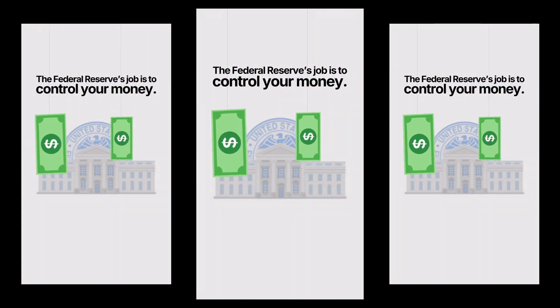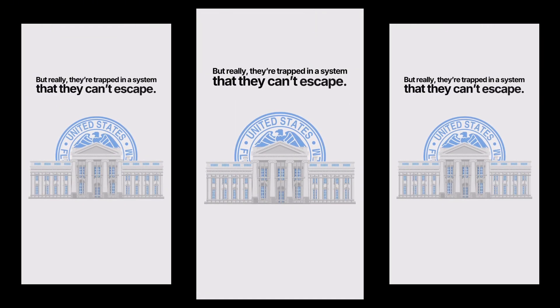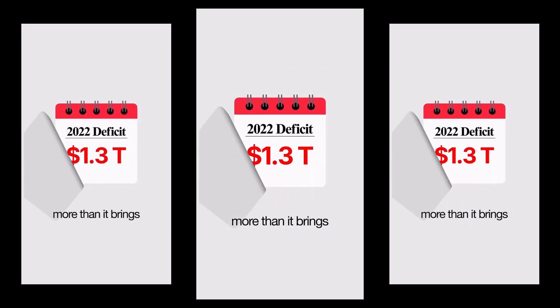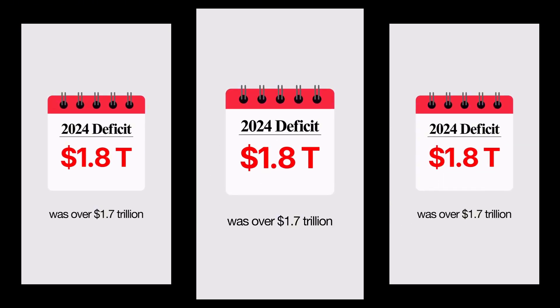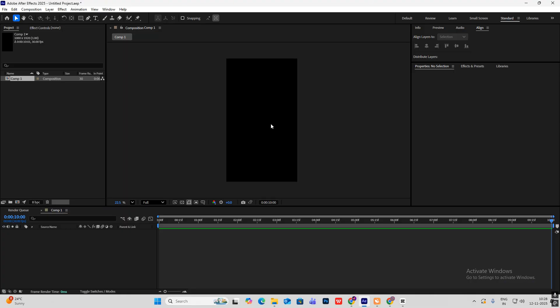The Federal Reserve's job is to control your money, but really they're trapped in a system they can't escape. Every year the US government spends way more than it brings in through taxes — last year's deficit was over 1.7 trillion dollars. Someone has to buy all that debt. Hi everyone, today we are going to make a simple animation, very helpful for beginner After Effects users who want to make viral reel animations.